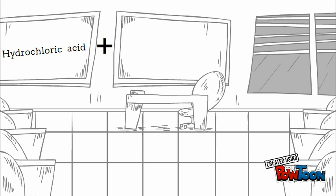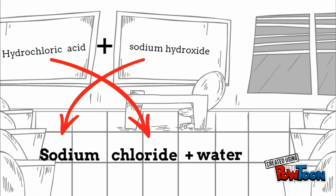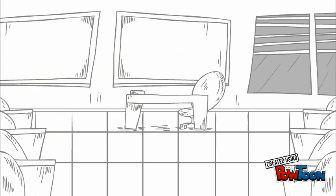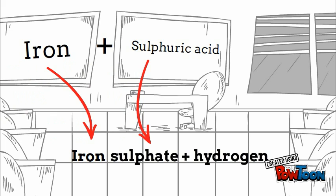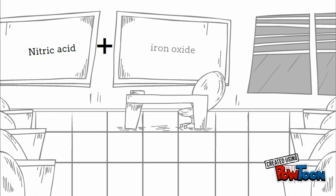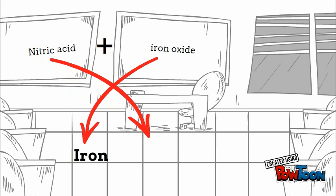Hydrochloric acid plus sodium hydroxide makes sodium chloride and water. Iron and sulfuric acid makes iron sulfate. Nitric acid and iron oxide make iron nitrate.